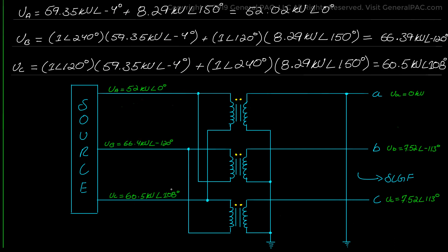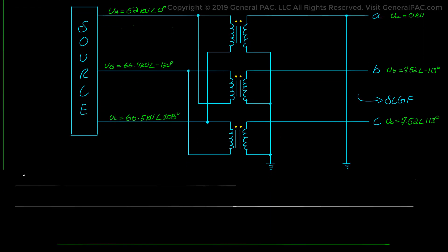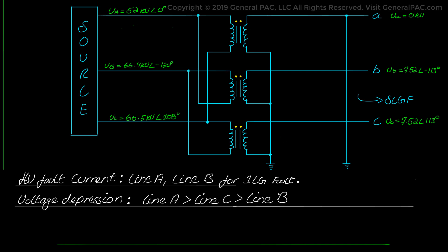For a one-line-to-ground fault, we clearly see that the high voltage line A voltage is the most depressed since the fault was on line A on the low voltage side. We will also have some depression on the high voltage line C voltage, while we don't see any significant depression on the high voltage line B voltage. This lines up very well with the current flow on the high voltage side — the high voltage fault current flows only on line A and line C for a low voltage one-line-to-ground fault on line A, due to the specific type of delta connection. In terms of voltage quantities, the largest depression occurs on line A, followed by line C, and line B sees no significant depression.